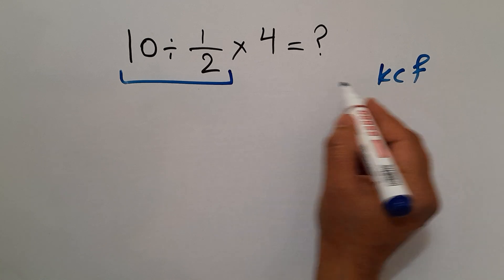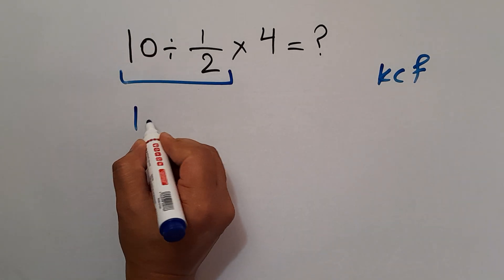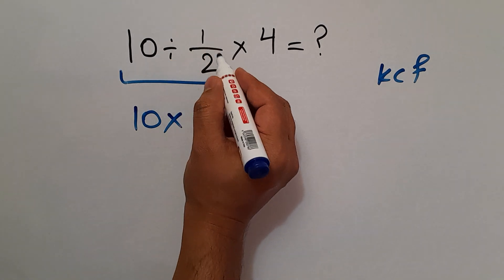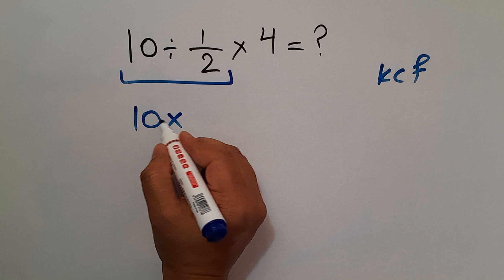Keep the first fraction which is 10, change division to multiplication, and flip the second fraction. 10 times just 2, and times 4.